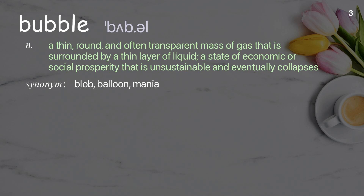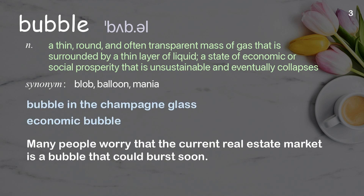Bubble: a thin, round and often transparent mass of gas that is surrounded by a thin layer of liquid; a state of economic or social prosperity that is unsustainable and eventually collapses. Examples: bubble in the champagne glass, economic bubble. Many people worry that the current real estate market is a bubble that could burst soon.